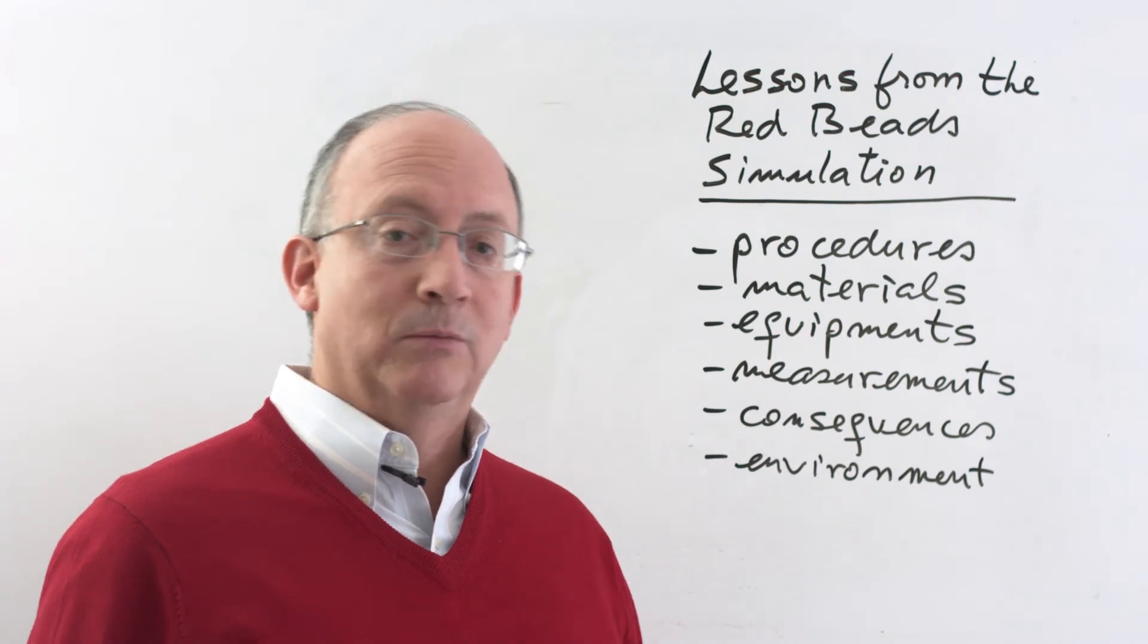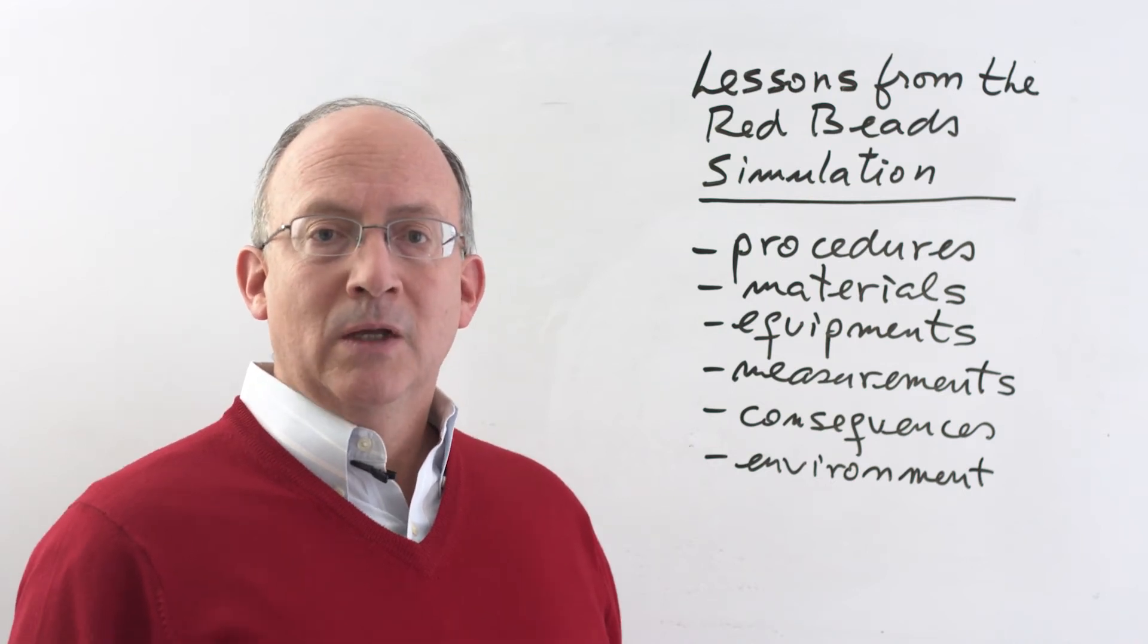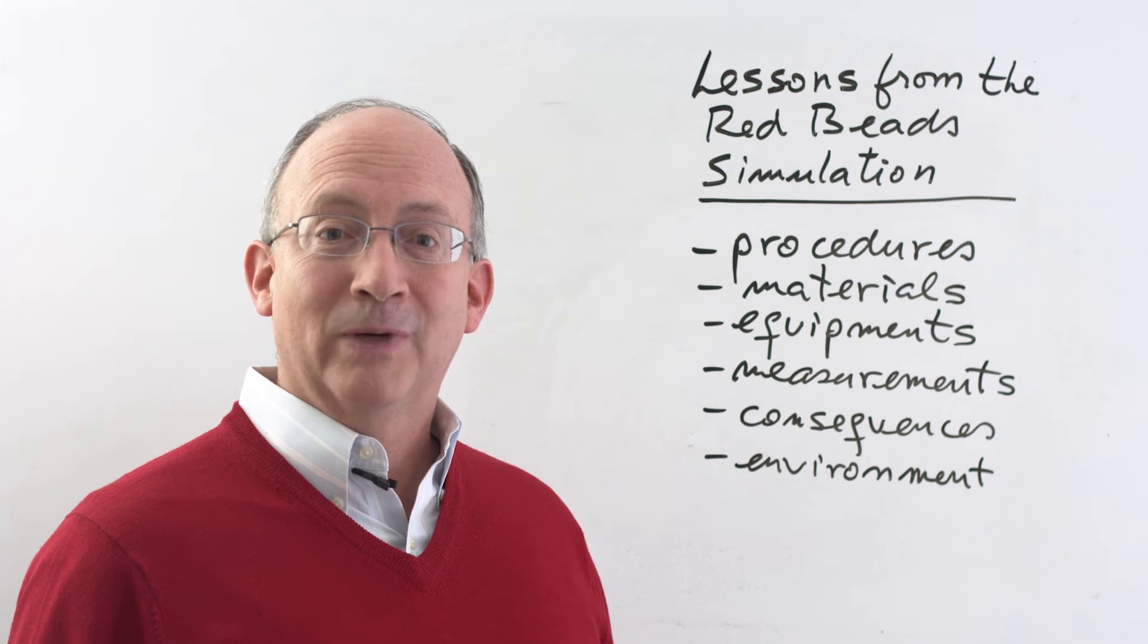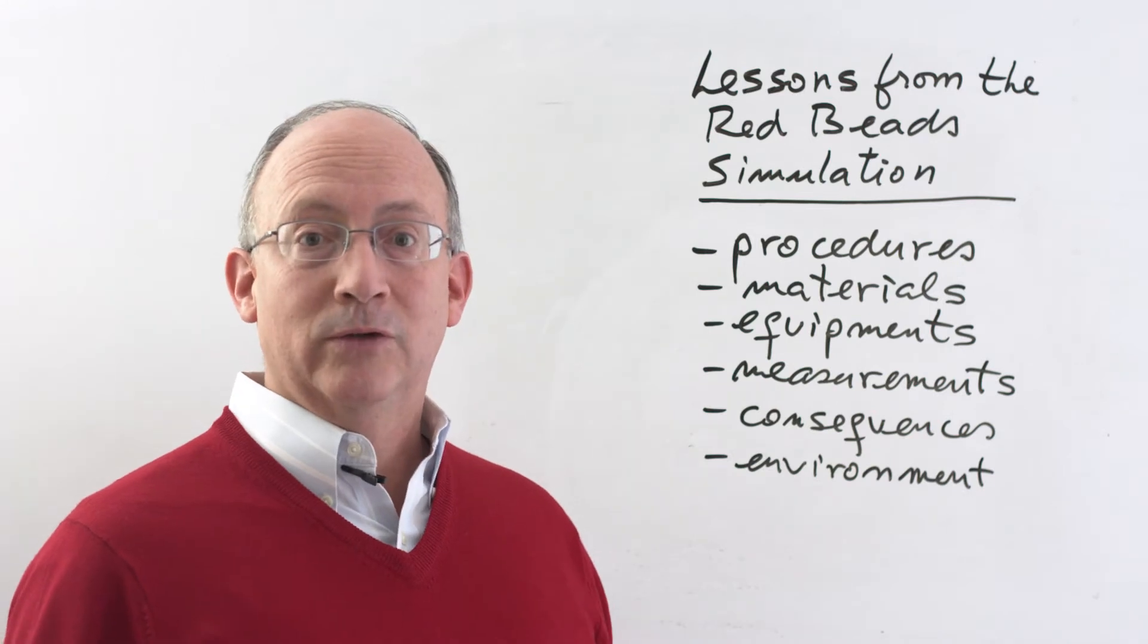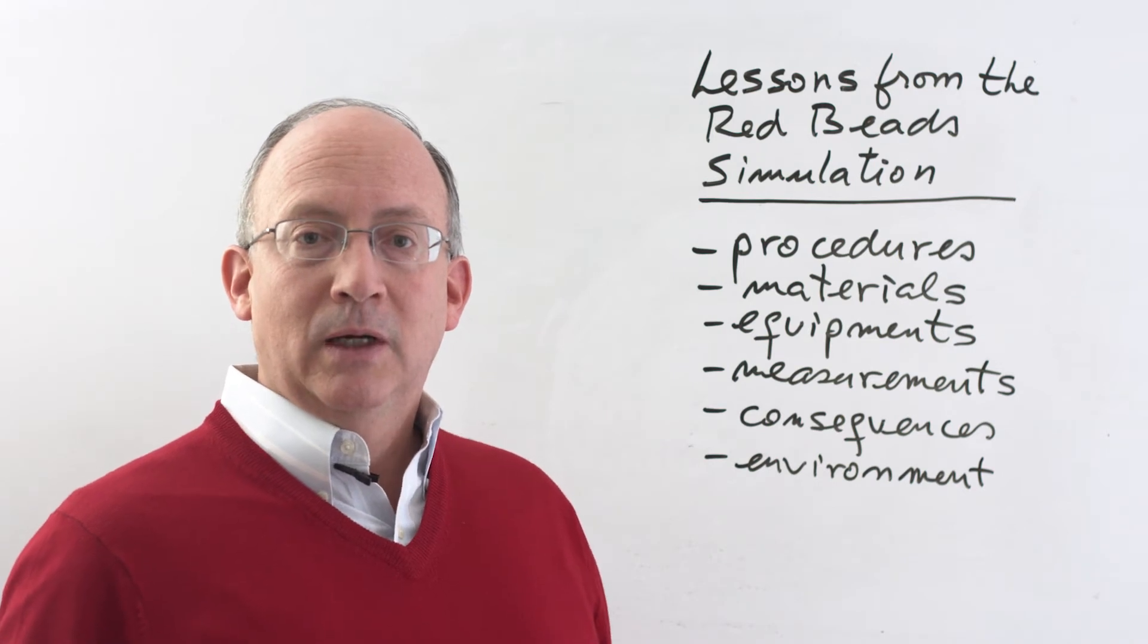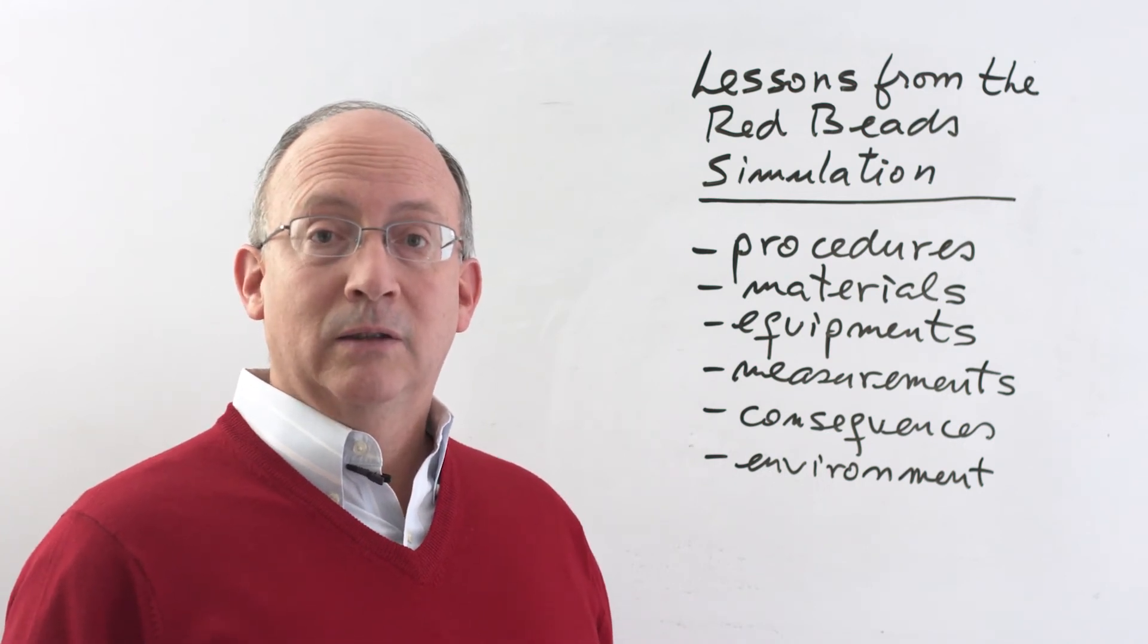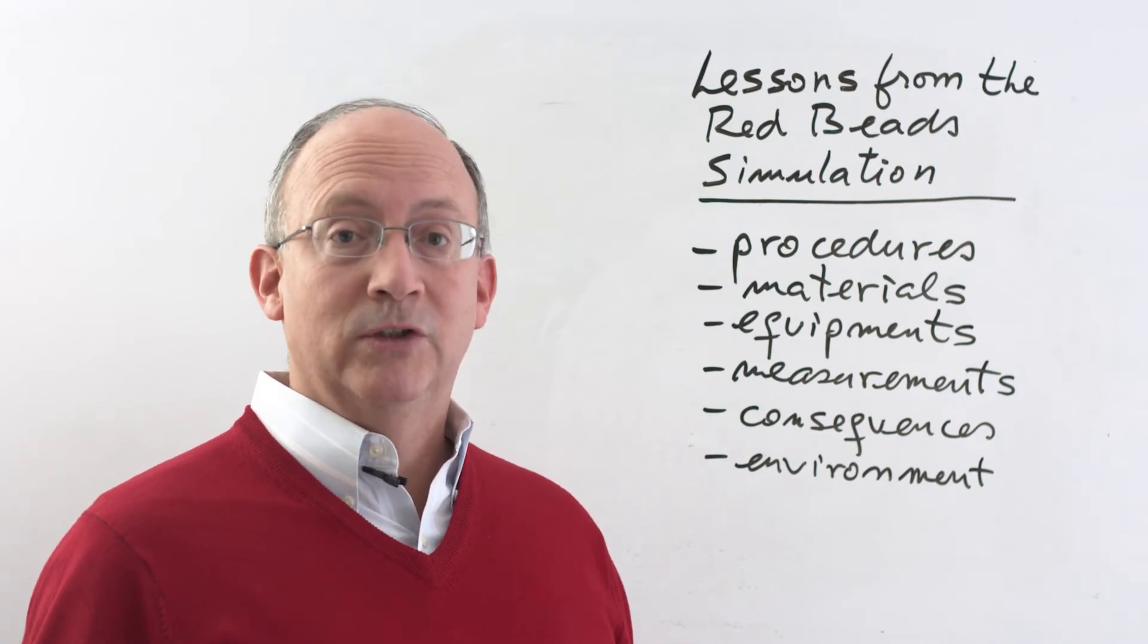Like in the case of the simulation, the supervisor would not let the workers improve the process. So when you look at these components of a system, you will remember that nobody was actually working on the system. No worker was allowed to change the system of production. None of these elements were under the power of the worker. The worker had no power to change any of these things. And yet, they were all expected to meet a target for very few red beats. In the case that I just showed you, five. And interestingly, however, they felt the consequences of not reaching those targets.